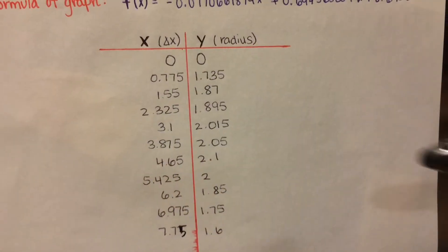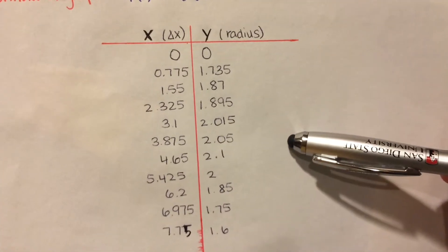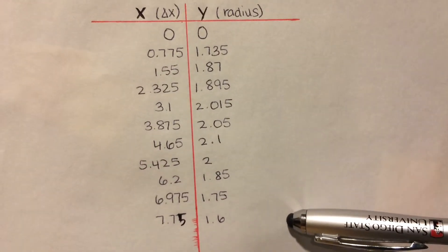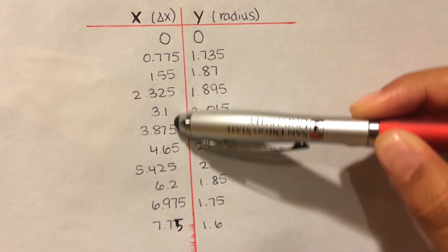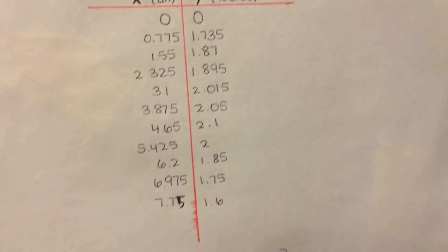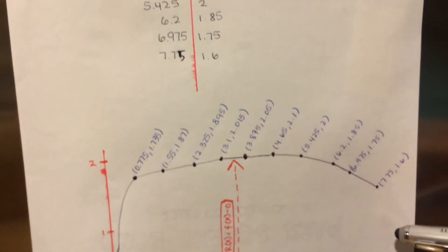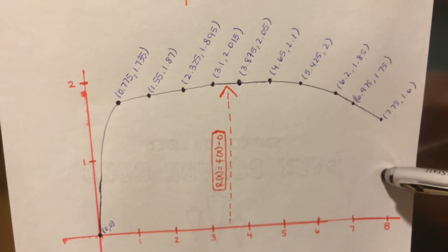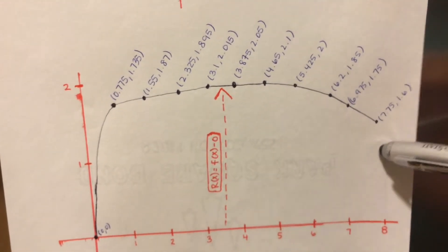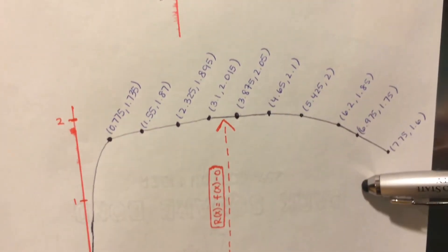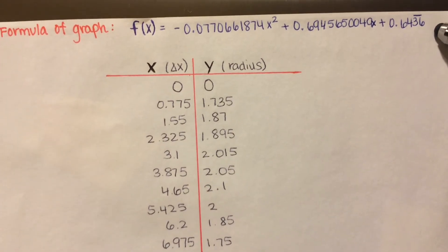With all our cross sections, we're able to generate this XY table. Our y-values are all our radii of our cross sections, and the x's are 11 equal partitions. Down here we have our graph, which we were able to generate with our XY table. After putting our points in a stat plot in a calculator, we got the estimated curve, which is our f(x).